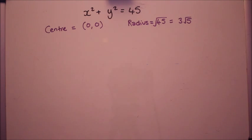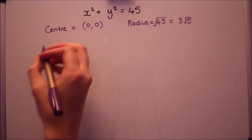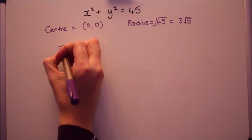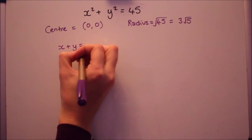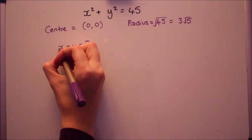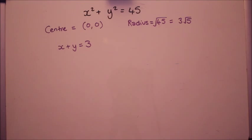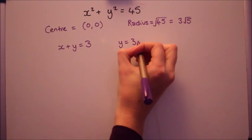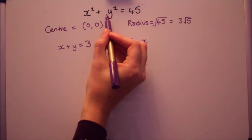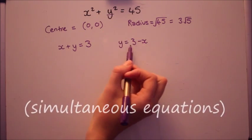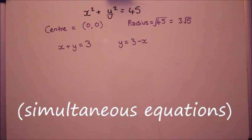What I'm going to do is rearrange the linear equation to make one of x or y the subject. It doesn't matter which. I'm just going to use y. Now I'm going to substitute this 3 minus x for y in the more complicated equation.